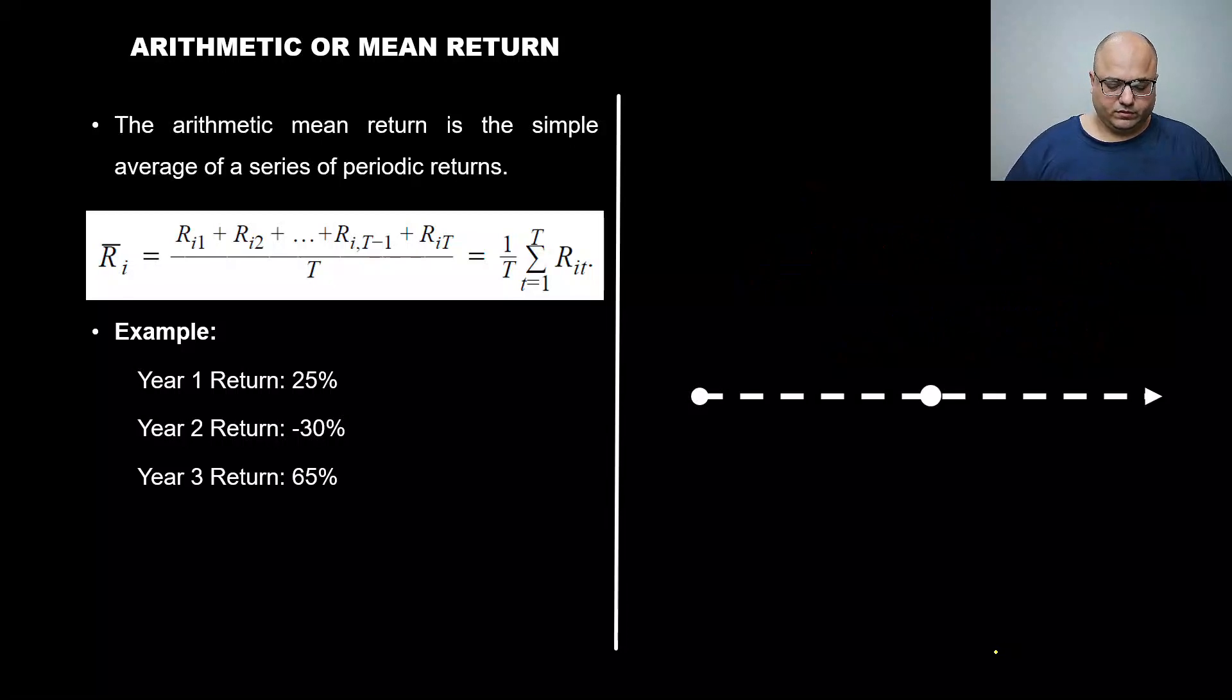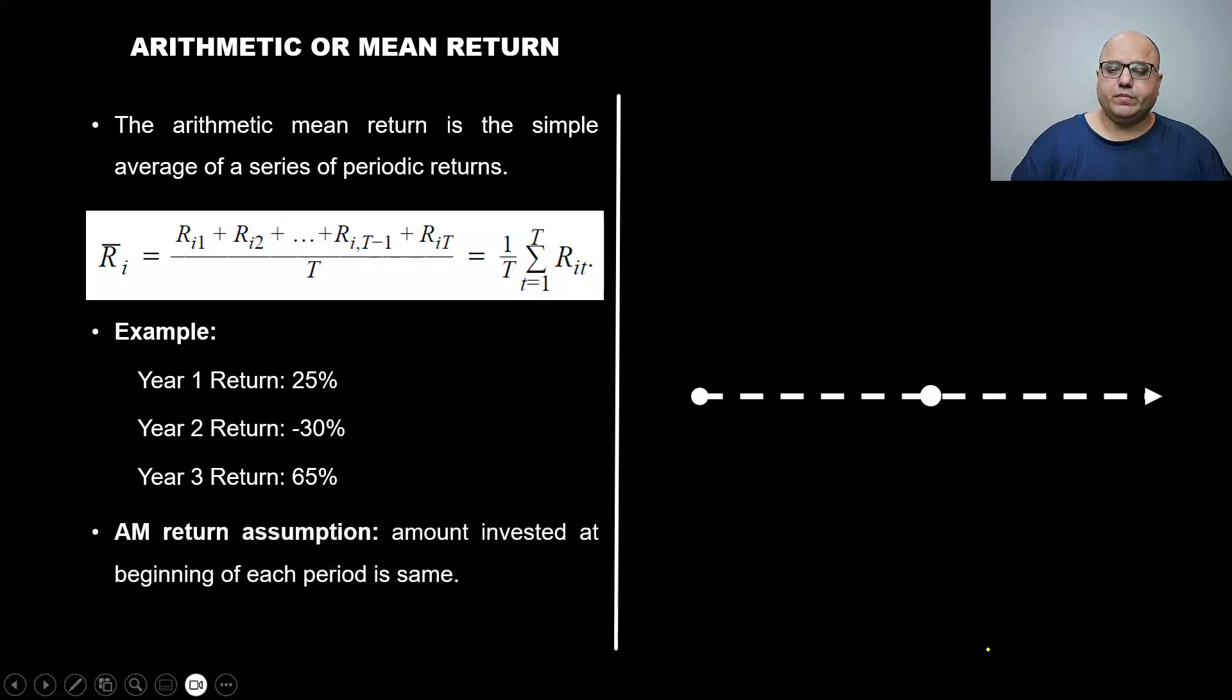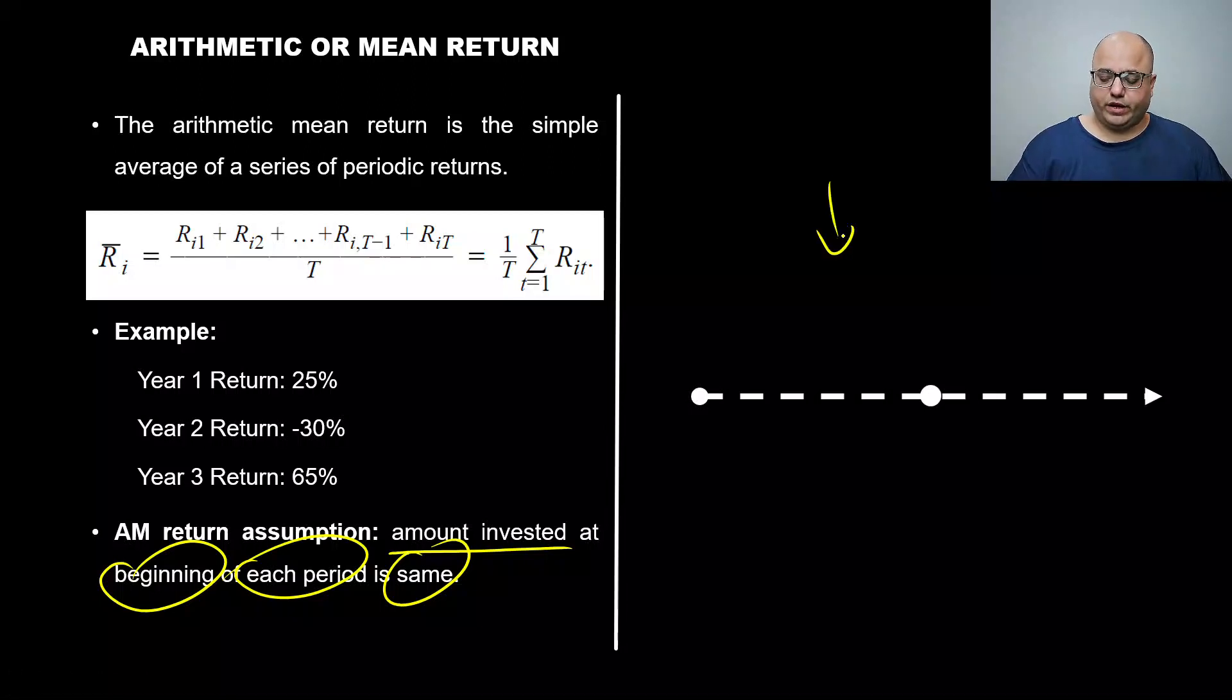If there were more numbers, then we would have divided by that. For example, if there were five instances, five yearly returns, we'd divide by five. You guys need to understand that the arithmetic mean return assumption is very important, which when we go to geometric mean in the next video, you'll realize how important that is.